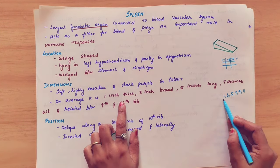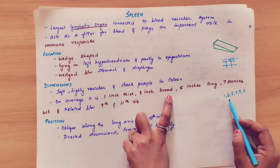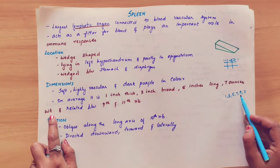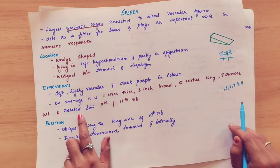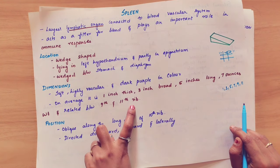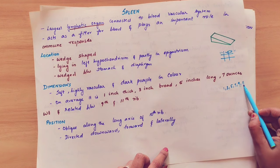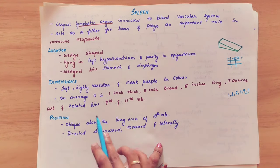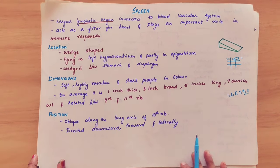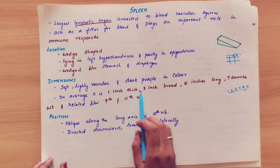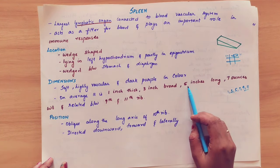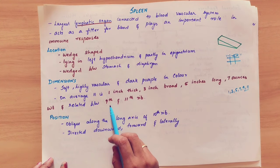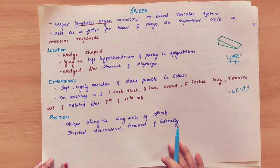1 inch thickness, 3 inches broad, 5 inches long, 7 ounces weight, and it is related to the 9th and 11th rib. Using these odd numbers, you can easily remember the dimensions of the spleen: 1 inch thick, 3 inches broad, 5 inches long, 7 ounces weight, related to the 9th and 11th rib.